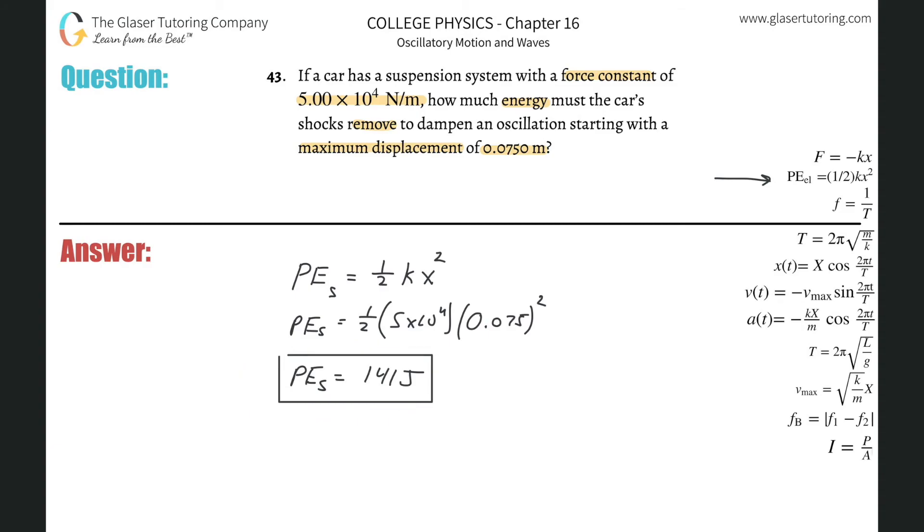from the springs—basically from the shocks, which are springs. So this answer is not only the maximum potential energy inherent in the spring; it's also the maximum energy that has to be dissipated if the oscillation were to stop.